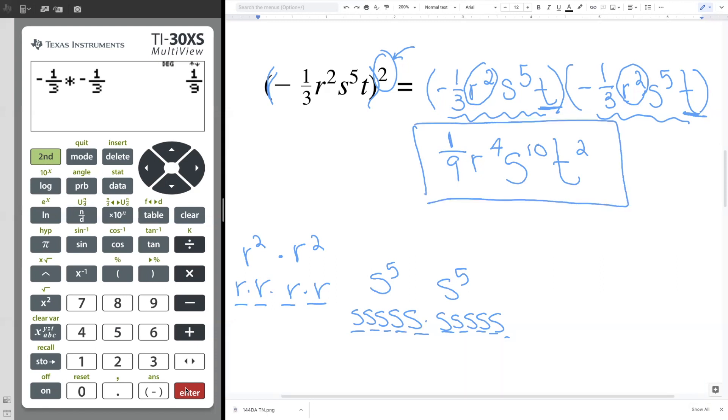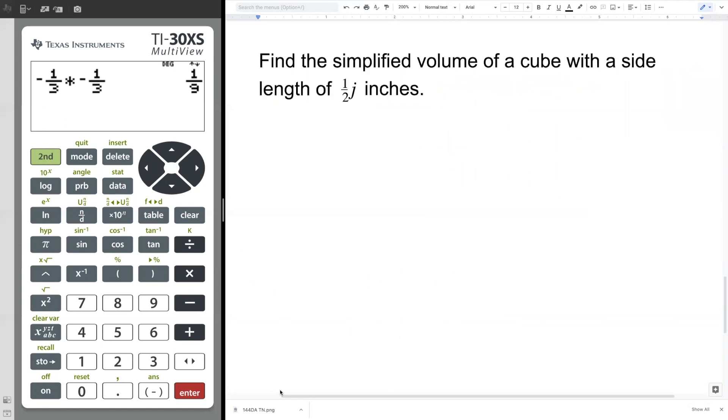You say, but what's R, S, and T? I say, I don't know. I have to stop here because R, S, and T are a mystery. This is as much simplifying as I can do. All right, let's look at the last one, number 14. Number 14 says, find the simplified volume of a cube with a side length of one-half J inches.